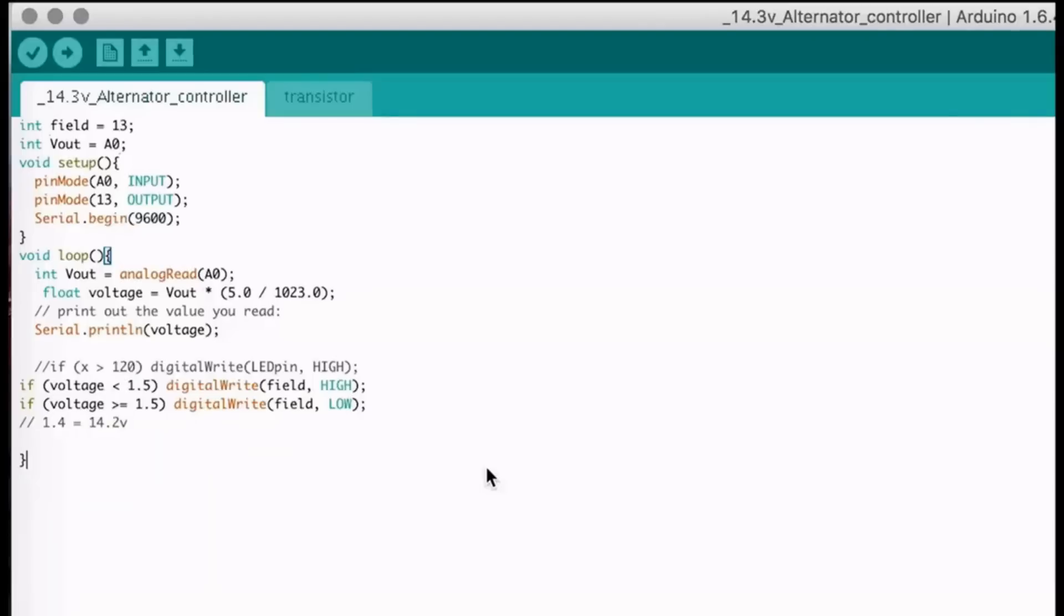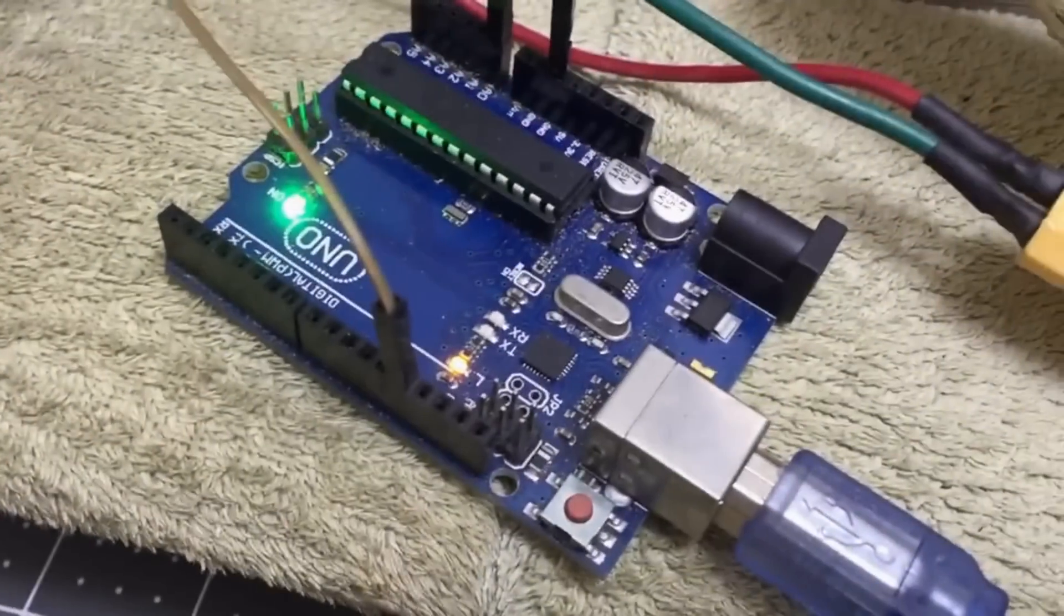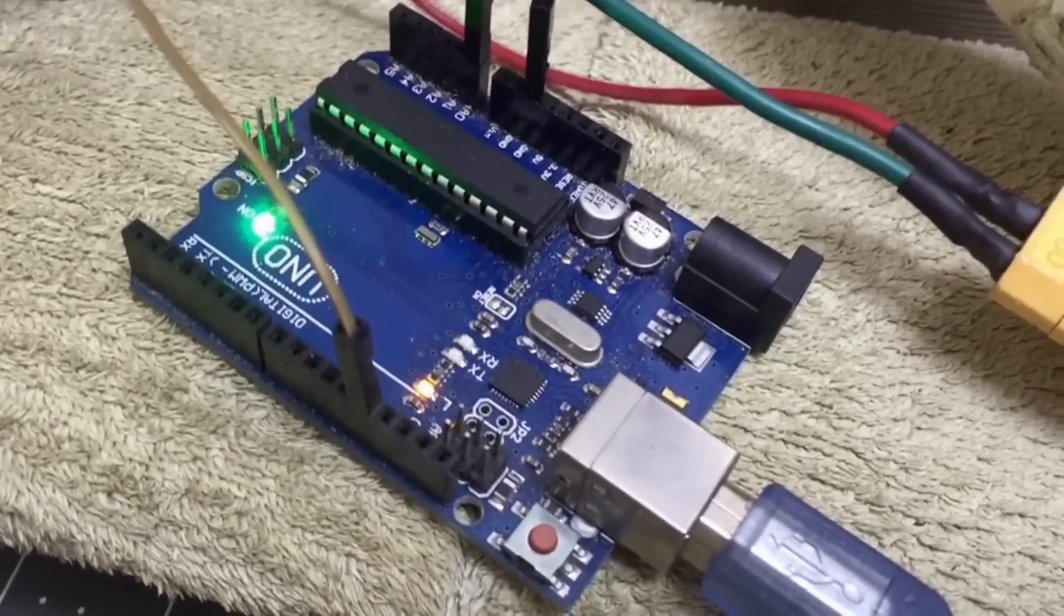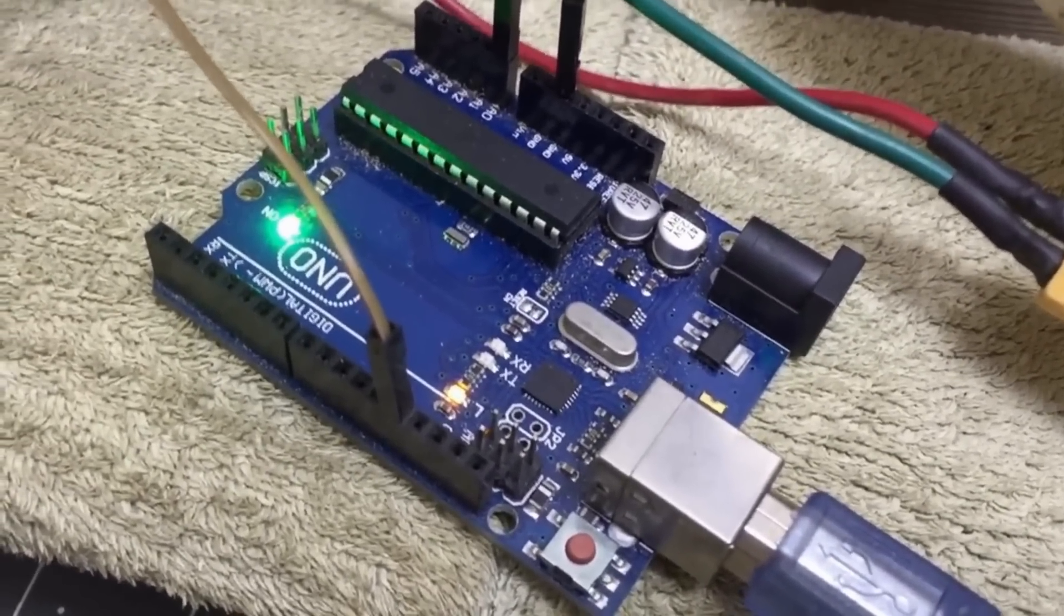See it flickering on and off. And here's the code to control it. Now if the output is below the 14 volts, which is the threshold, then the field winding is turned on. As the engine spins up and the alternator goes up beyond the threshold, then you turn it off. Once it goes past the threshold, then the Arduino will turn...